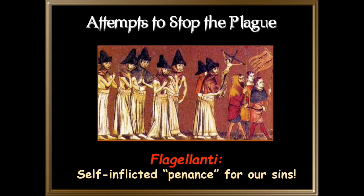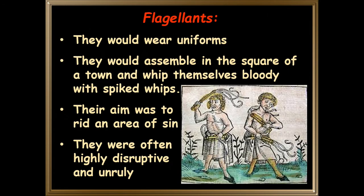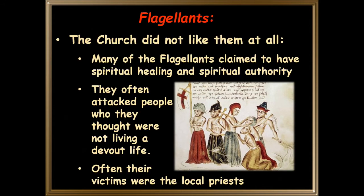The flagellants performed self-inflicted penance for sins. They would wear uniforms, assemble in the square of a town, and whip themselves bloody with spiked whips — their aim was to rid an area of sin. They were often highly disruptive and unruly. The church did not like them at all. Many flagellants claimed to have spiritual healing and authority, and they often attacked people they thought were not living a devout life, with local priests frequently among their victims.